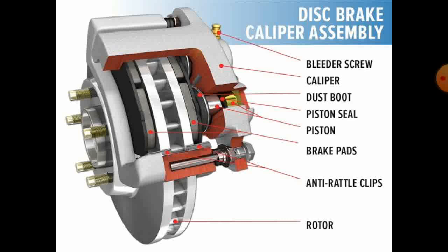The next topic is the disc brake. There are different types of parts in the disc brake. A bleeder screw is used — when air bubbles form in the brake fluid, the bleeder screw is loosened to remove the air. Other parts include: caliper, dust boot, piston seal, piston, brake pad, anti-rattle clips, and rotor. These are the parts of the disc brake.